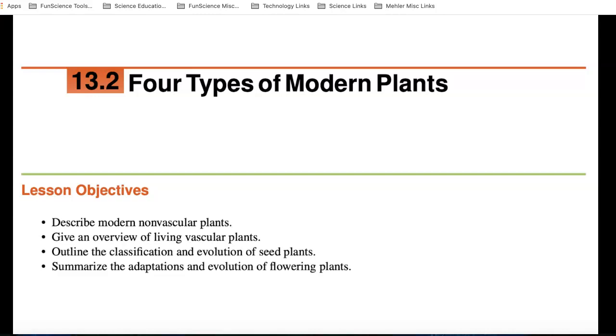We're going to look at modern non-vascular plants, then give an overview of living vascular plants, look at the classification and evolution of seed plants, and summarize the adaptations and evolution of flowering plants. Remember, flowering plants, the most successful type of plant on our planet. Almost 260,000 different species.